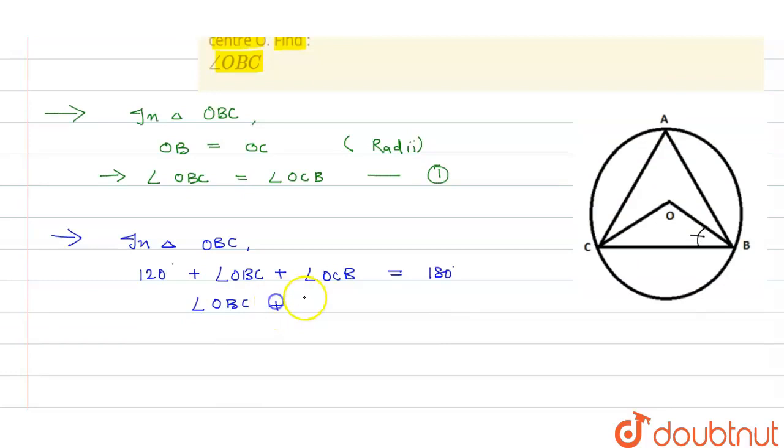Then, angle OBC is equals to 60 degrees upon 2, and that is equals to 30 degrees. So, this is our answer. Thank you.